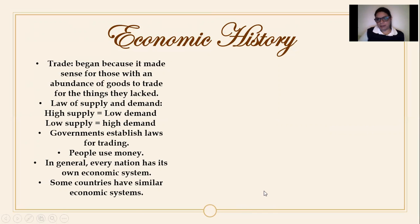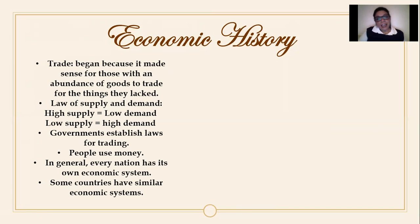Governments establish laws for trading; even trading has its own rules established by the government. Now people use money, which was created in China. From that invention, it was possible for countries to have their own particular currency. Every nation has its own economic system, though some economic systems are similar between countries. For example, some countries share the same currency as the United States, Puerto Rico, and Canada — they may have different values and different ways of doing business, but at the end it's the same currency.